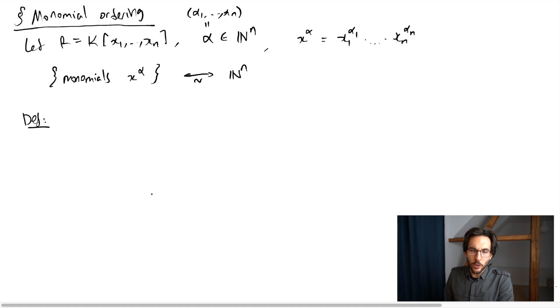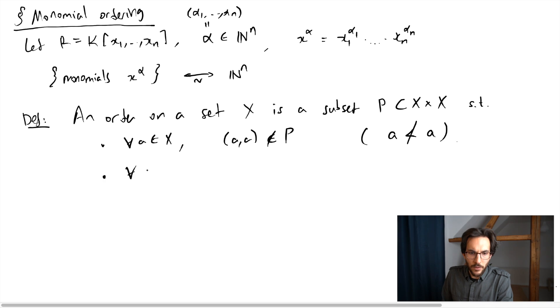So we have a set X. An order is going to be a subset of X cross X, and it's going to record elements, let's say (a,b) where a is less than b. It should satisfy the following: for no element in X should (a,a) be inside of P—that means a is not smaller than itself. And if (a,b) is inside of P, that means a is less than b, then (b,a) is not in P, so that a less than b implies b is not less than a. Finally, we would like transitivity: if a is smaller than b and b is smaller than c, then a should be smaller than c.